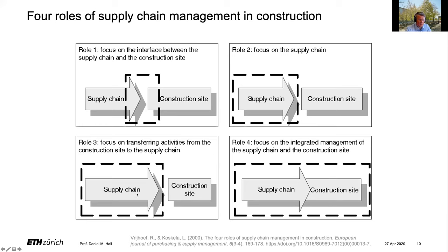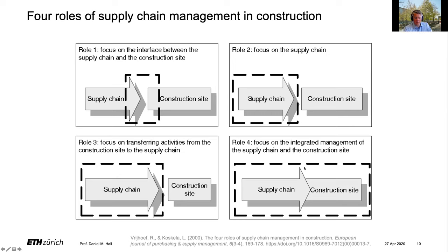Third is about the transfer of activities from the construction site to the supply chain. This is a large part of what we talked about with industrialization of construction — especially with offsite — the idea that you take activities from the construction site and move them into the supply chain. So the prefabrication of a wall element: the construction site box is a little bit smaller, the supply chain is a little bit bigger. You're moving activities into the supply chain through more prefabrication and pre-processing. The fourth role is the focus on integrated management of the supply chain and the construction site holistically.